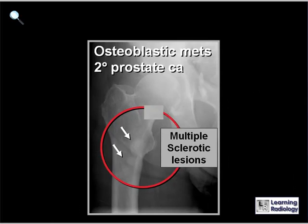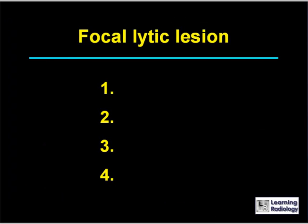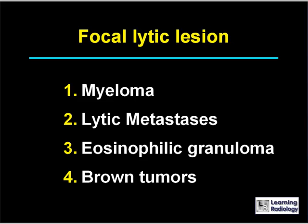The differential is for a focal lytic lesion. There are four major causes. The four major causes of a focal lytic lesion in bone include multiple myeloma, lytic metastases, eosinophilic granuloma, and brown tumors.